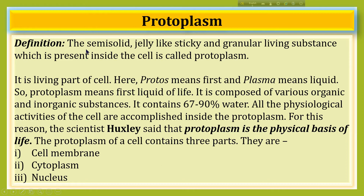Protoplasm. The semi-solid, jelly-like, sticky and granular living substance which is present inside the cell is called protoplasm. It is the living part of a cell. The word 'protos' means first and 'plasma' means liquid, so protoplasm means the first liquid of life. It is composed of various organic and inorganic substances and contains 67 to 90% water. All the physiological activities of the cell are accomplished inside the protoplasm. The scientist Huxley said that protoplasm is the physical basis of life. The protoplasm of a cell contains three parts: cell membrane, cytoplasm, and nucleus.